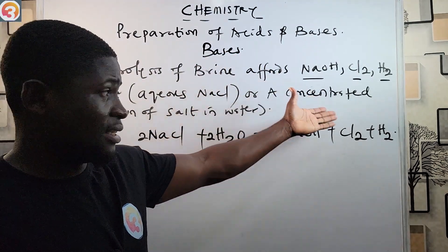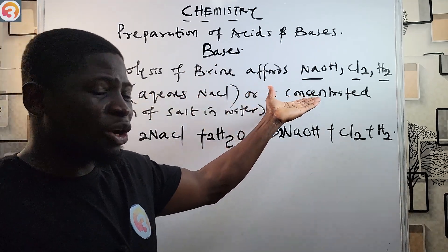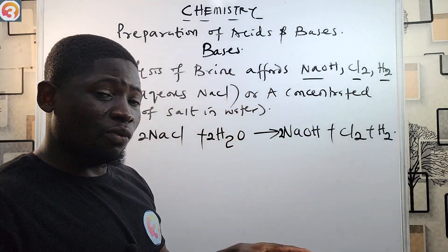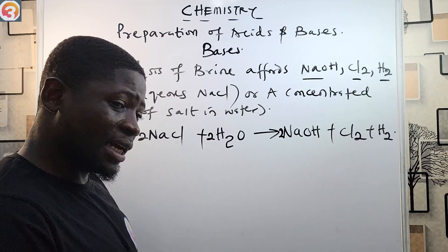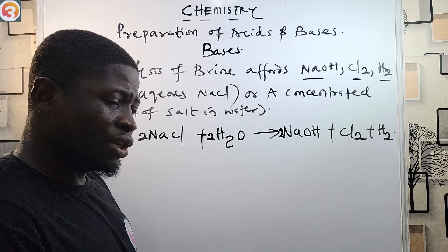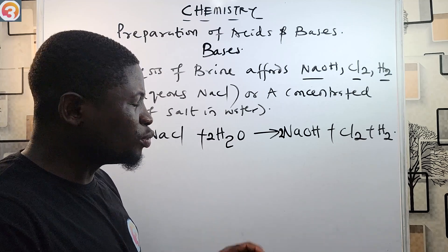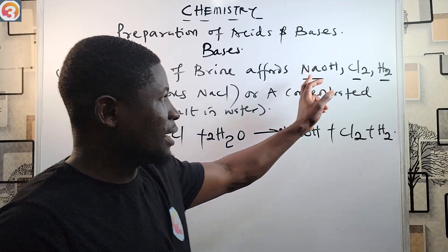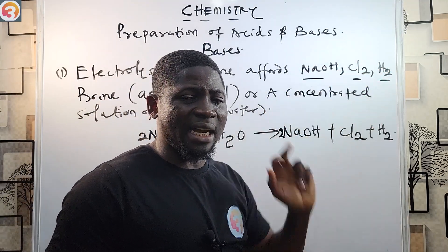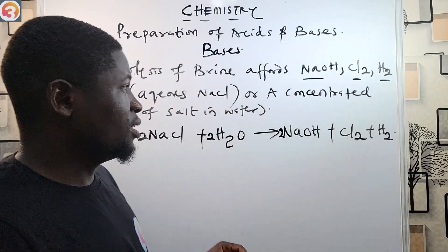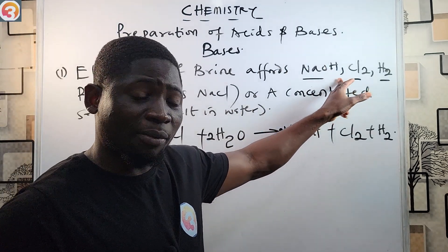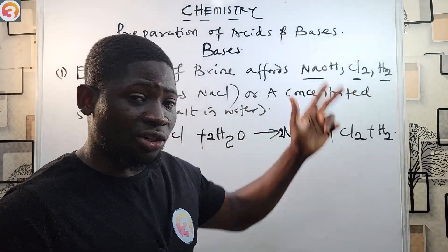So electrolysis of brine — passing electricity through a concentrated solution of NaCl — causes it to decompose and form sodium hydroxide, chlorine gas, and hydrogen gas. This is also another way of producing chlorine gas industrially.